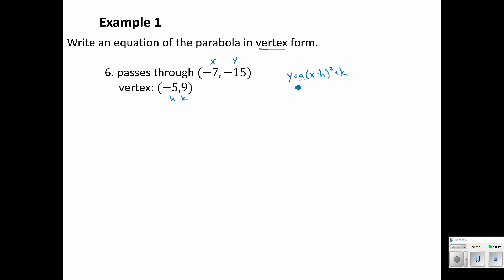So my y value negative 15 equals a, that's what we don't know, times the quantity my x value negative seven minus h, that's minus negative five, squared, and then plus k, which is plus nine. For solving for a, I'm going to subtract the nine over to the left hand side. So I have negative 24 equals a times negative two squared. Negative two squared is a positive four. So I'm going to divide both sides by positive four and I get negative six equals a.